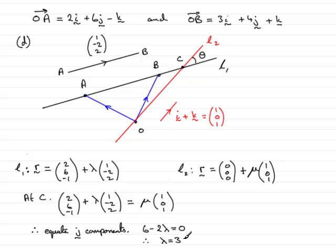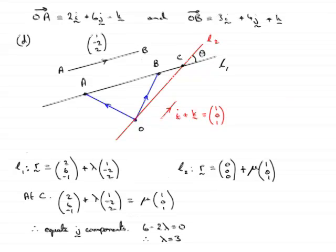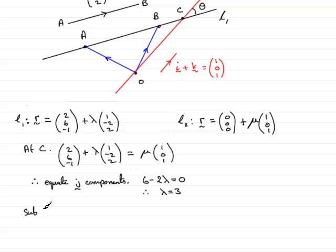Knowing that lambda equals 3, all I need to do now is just simply substitute it into this equation here, into the equation for L1. So sub lambda equals 3 into the line L1, and this will give me the position vector of c. Therefore, the position vector of c, that's r, equals (2, 6, -1) plus 3 multiplied by the direction vector AB, (1, -2, 2). And working that out, we have 2 plus 3, which is clearly 5, 6 minus 6, that's 0, and then -1 plus 6, that's going to be 5.